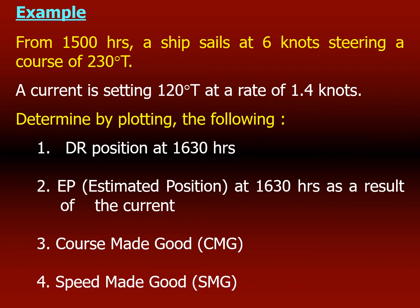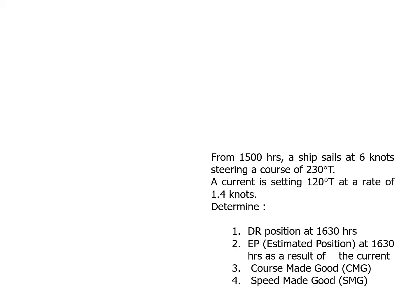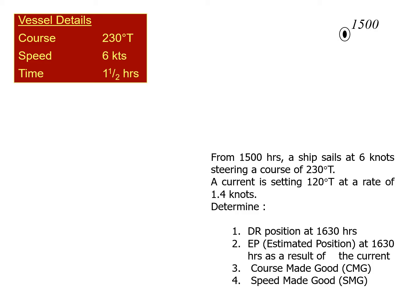Let's start with the solution. So summarizing: at 1500 hours the ship sails at six knots steering a course of 230 degrees true. This is a fixed position — an accurately known position — denoted by a circle with a dot in the middle. From 1500 hours, we sail at six knots on a course of 230 degrees. In one and a half hours the vessel should have done about nine miles, so you draw a line at 230 degrees for a distance of nine nautical miles.